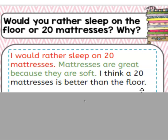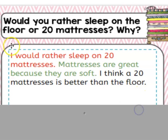We are looking to give you all your points. We're looking for a topic sentence, reason sentence, and closing sentence. Here's what all the points would look like: 'I would rather sleep on 20 mattresses. Mattresses are great because they are soft. I think 20 mattresses is better than the floor.' If you do those three sentences — topic, reason, closing — then give yourself a high five because you're going to get all of your points.